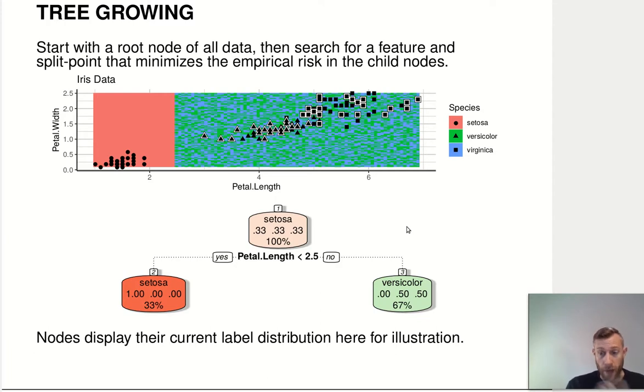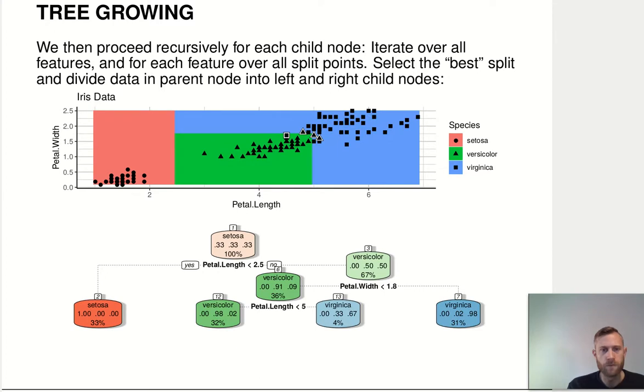And the way that I've found the split point is I've minimized the empirical risk in the child node. So in that case, either minimizing the Gini score or the Bernoulli loss.